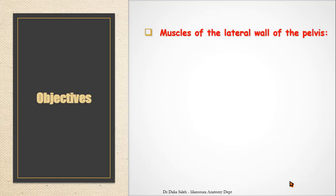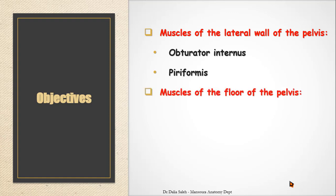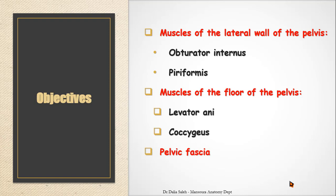First, I will talk about the muscles of the lateral wall of the pelvis, including the obturator internus and piriformis muscles. Then I will talk about the muscles of the floor of the pelvis, including the levator ani and the coccygeus. And finally, I will talk a little bit about the pelvic fascia, both the parietal and the visceral layers.